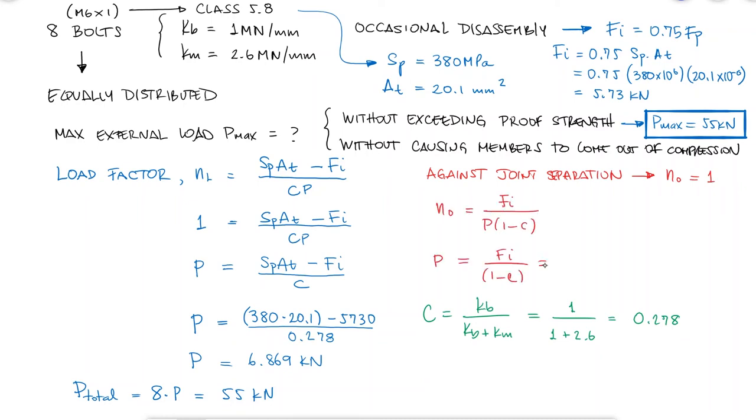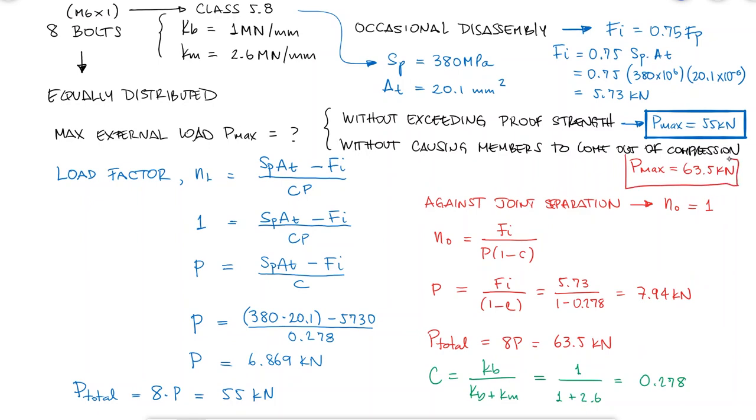Solving for P and using the values we had already found, we find the maximum load at each bolt of 7.94 kilonewtons, which means that the maximum external load at the joint that has 8 bolts is 63.5 kilonewtons.